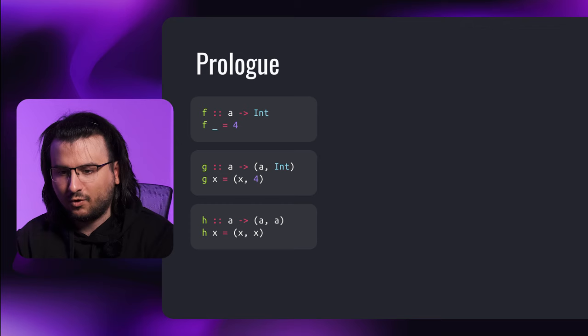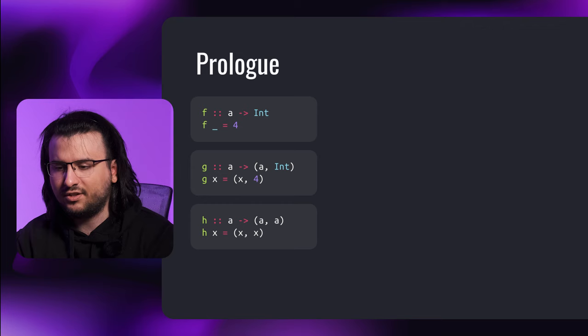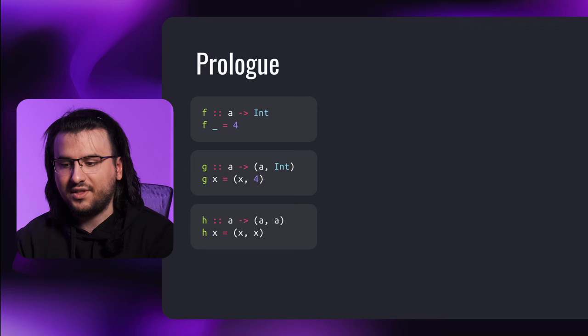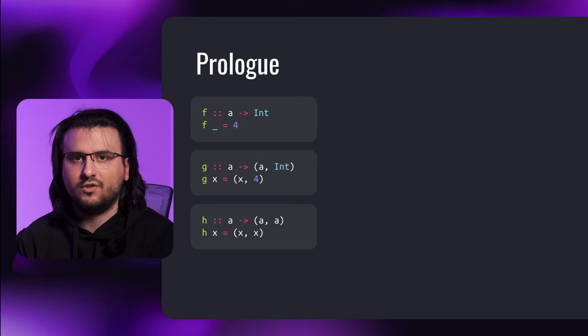Now let's start with something graspable. Consider these functions: f accepts an argument and returns 4; g accepts an argument and packs it and the number 4 into a pair; and h accepts an argument, duplicates it, and packs the result into a pair — h is also referred to as the diagonal function. Only one of these functions can be declared linear, and that is g. f cannot be linear because it discards its argument, which is used zero times. h cannot be linear because it uses the argument twice.